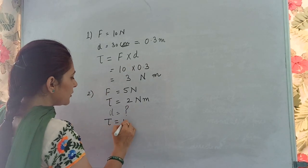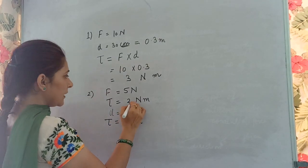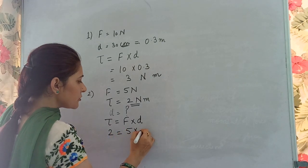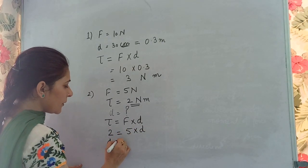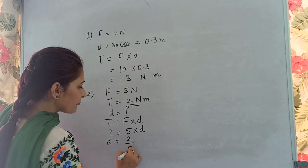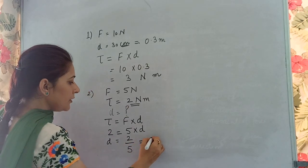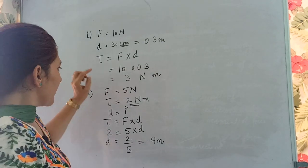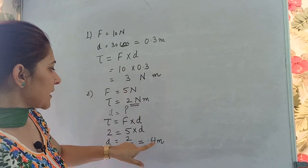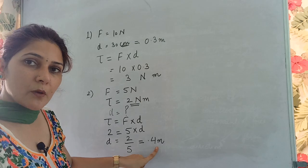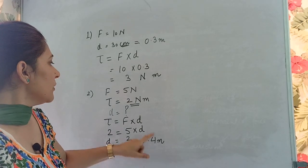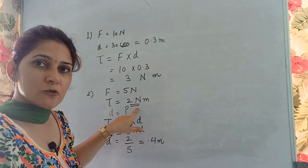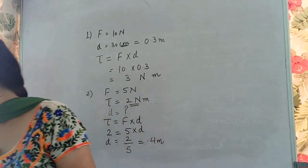Using the formula torque = F × d: 2 = 5 × d, so d = 2/5 = 0.4 meters. This means if we apply a 5 newton force at 0.4 meters from the pivot point, we get a turning effect of 2 newton meters.